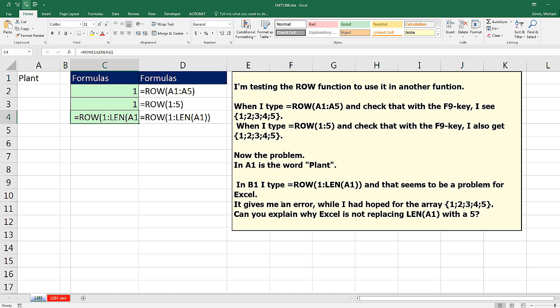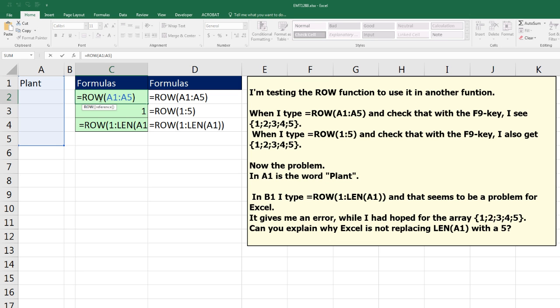And we have this question right here. And here's what this person asks. They're trying to create an array of sequential numbers. So the ROW function usually tells you for a cell reference, usually a single cell reference, what row it is.